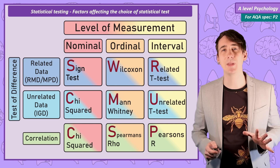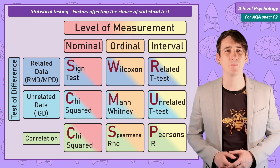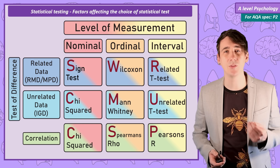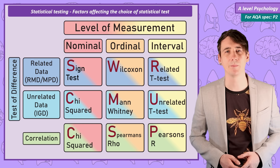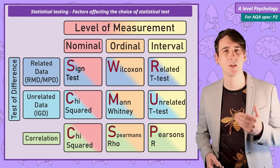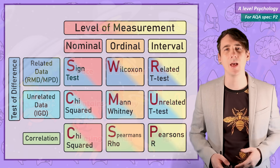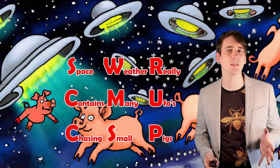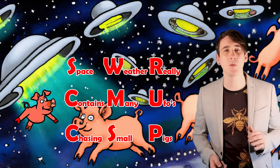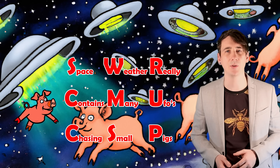At first this might be a little overwhelming with such a large number of unusually named statistical tests, but we need to memorise this table. If you write it out a few times from memory it will go in. A good strategy is to make a phrase with the first letter of each statistical test: S, W, R, C, M, U, C, S, P — for me that's 'space weather really contains many UFOs chasing small pigs.' You might think of one that works better for you, but the point is to get the right letters into the correct part of the table.